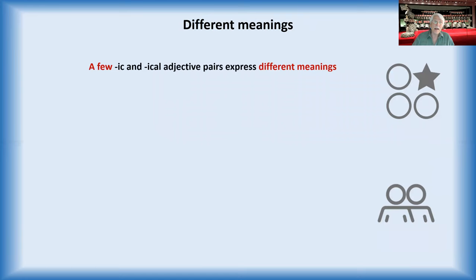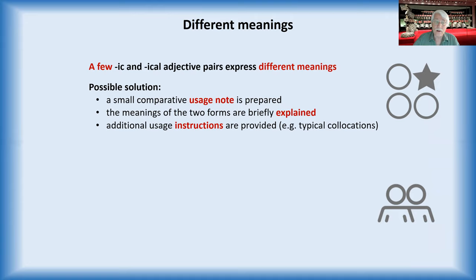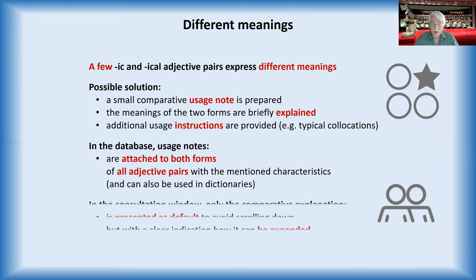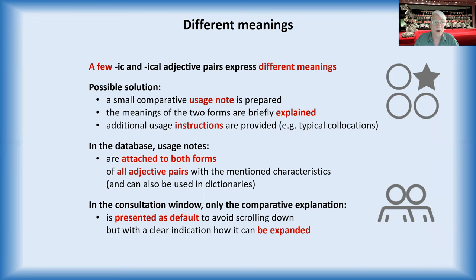Adjectives with different meanings. The solution would be here to make a small comparative usage note, briefly explain the meaning of the two words, and give some additional instructions. In the database, there should be attestations to both forms, not just one, which we saw in the dictionaries, of all the adjective pairs with this characteristic with different meanings. It's not a lot, but all of them. And they should be presented in the consultation window as default to avoid scrolling down. Then it can later be expanded.